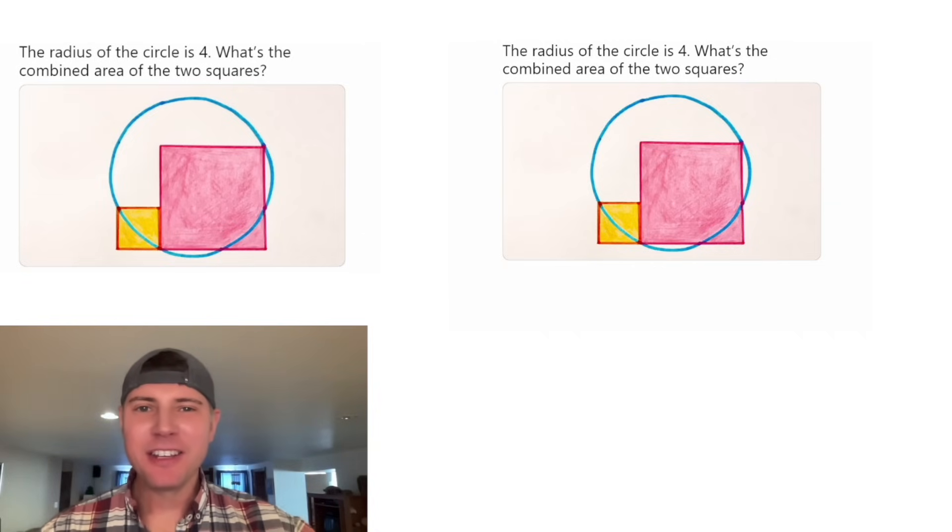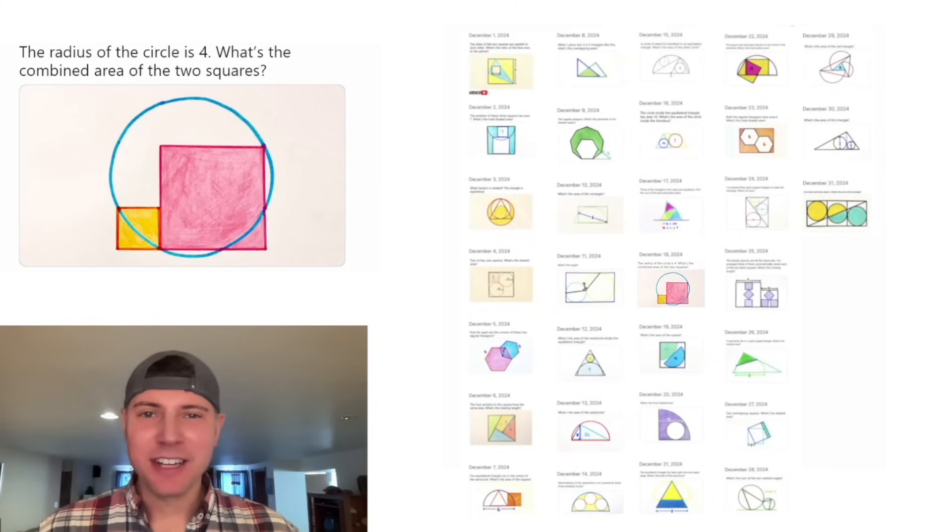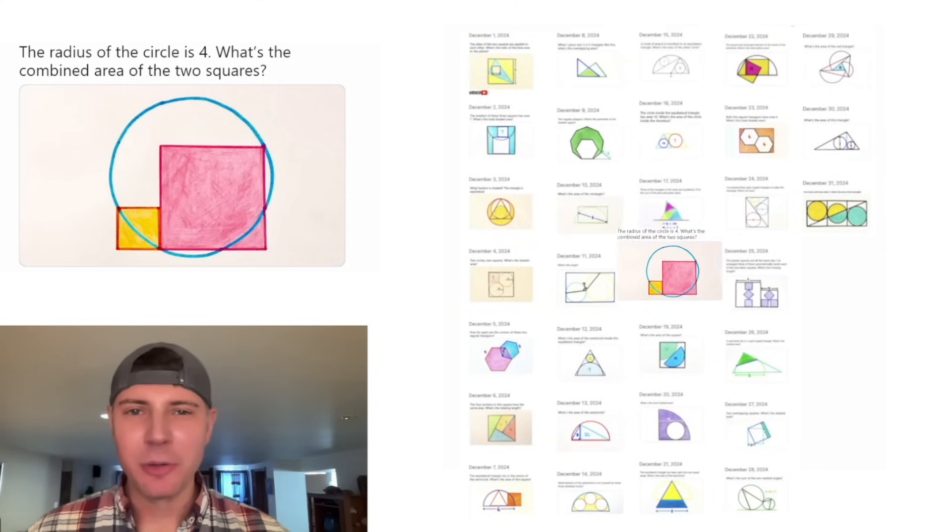Hey guys, this looks like a fun one. Radius of the circle is four. What's the combined area of the two squares? This is day 18 of our Advent calendar. For the month of December, we're gonna solve 31 Katrina Ag puzzles in 31 days.